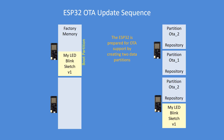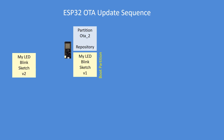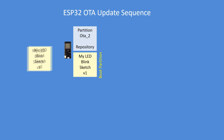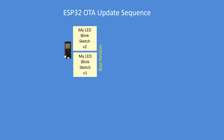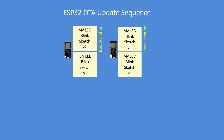I've now programmed the ESP32 with my Blink sketch and its boot partition is set. Then I've modified my code again and uploaded it. This time it goes to over-the-air update partition 2, and the boot partition gets reset to the second partition. When it starts up, my version 2 code starts from there.